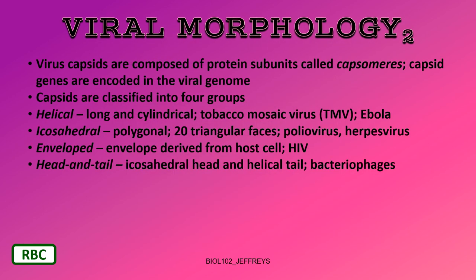Viruses are composed of protein subunits called capsomeres, and capsid genes are encoded in the viral genome. The viral capsid — the protein package with the genome inside — is called a virion. Capsids are classified into four groups: helical (long and cylindrical, like tobacco mosaic virus and Ebola); icosahedral (polygonal, with 20 triangular faces, like poliovirus and herpesvirus); enveloped (with a membrane derived from the host cell, as seen in HIV); and head-and-tail viruses like bacteriophages.